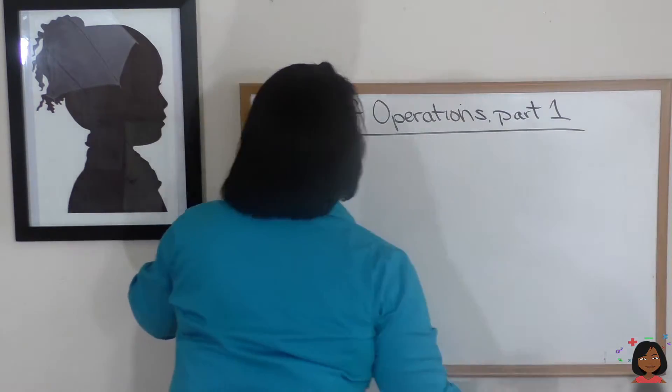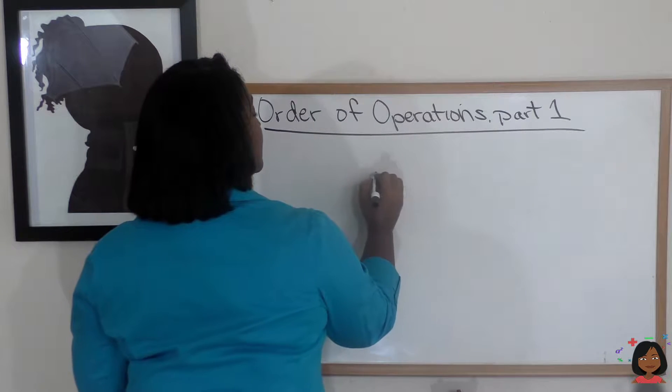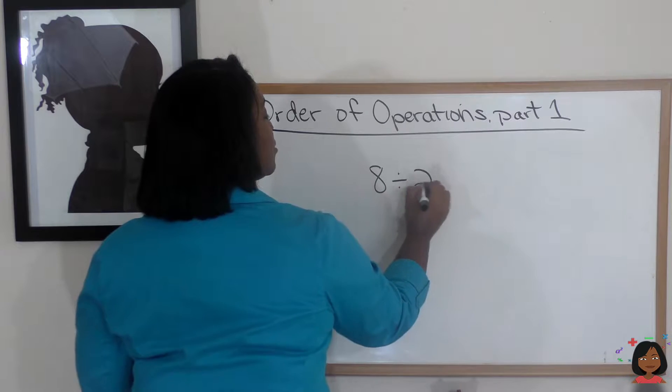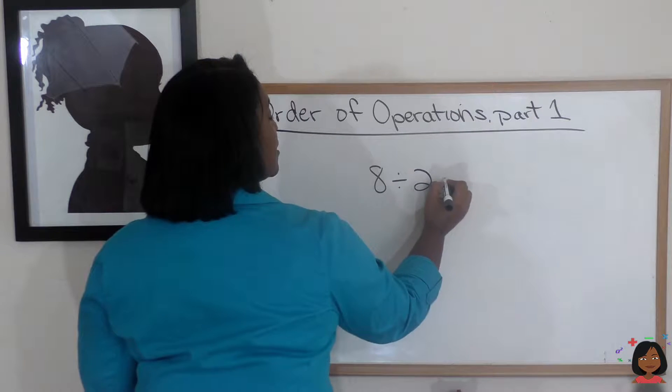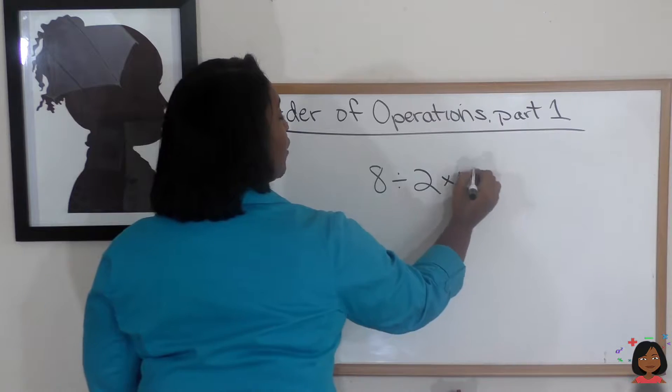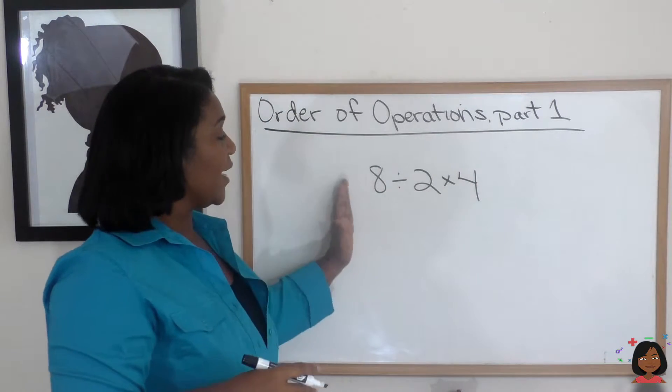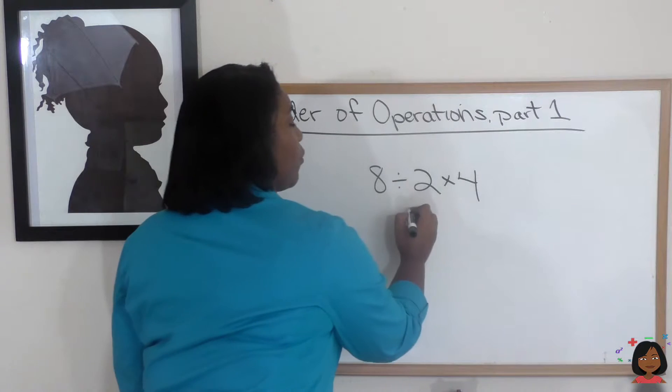Let's say I had the number 8 divided by 2 times 4. Here we go. Let's start left to right. 8 divided by 2 is 4.